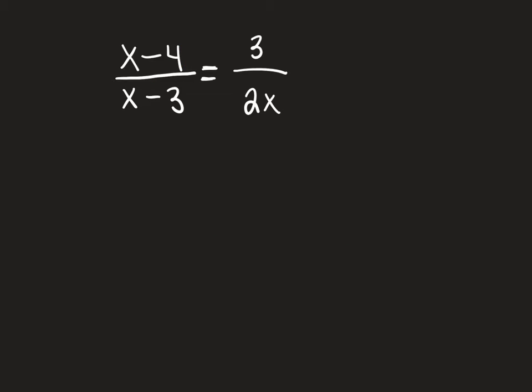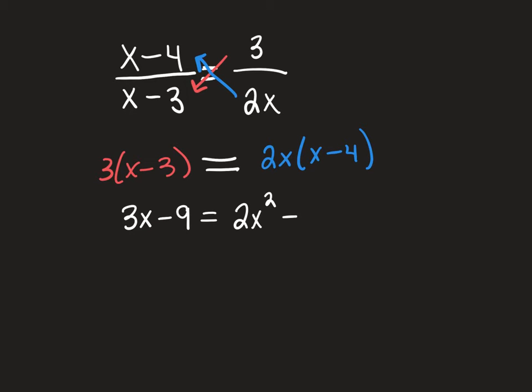All right, so for this one, same process, we're still going to cross multiply. We're going to take 3 times x minus 3, and we're going to set it equal, not make it a fraction. Then we have to distribute. So then you have 3x minus 9 equals 2x squared minus 8x. So what's different about this one? It has an x squared, which means it's what type of equation?